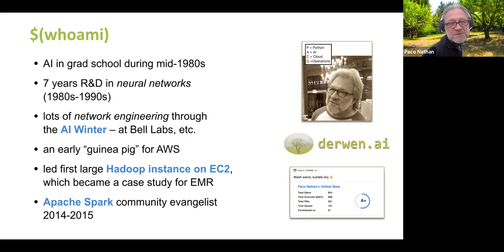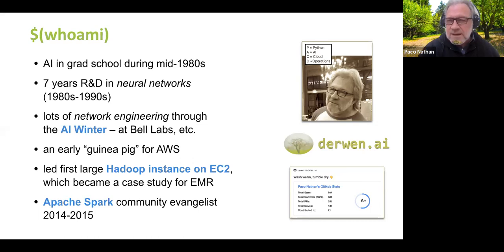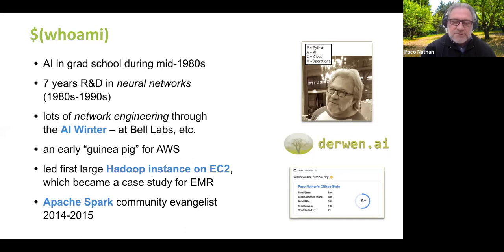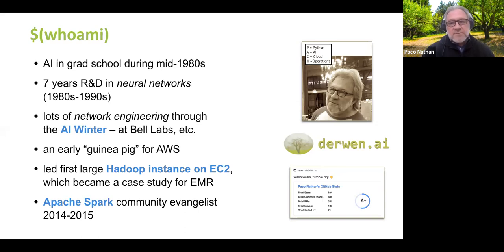During the AI winter, I went out and did a lot of network engineering, some cross-compiler work for embedded systems, and a lot of network security. I ended up having a very strange phone call from Seattle — some friends were working on a new project and wanted to bounce ideas off me. I ended up being kind of a guinea pig for AWS. Later on, I led the first large Hadoop instance on EC2, where we literally had to fix a Jira ticket on Hadoop to make it run efficiently on AWS.